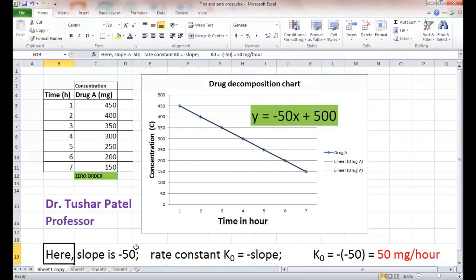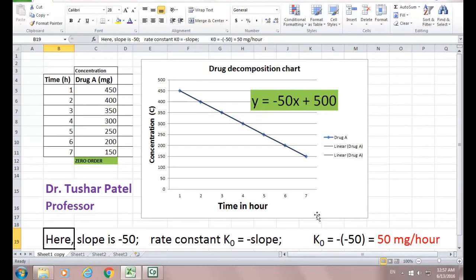Here the slope is minus 50. The rate constant K₀ is equal to minus slope. So that minus minus 50 is equal to 50 milligram per hour.